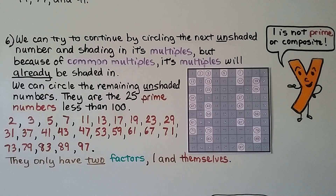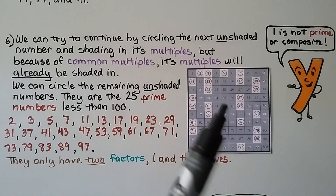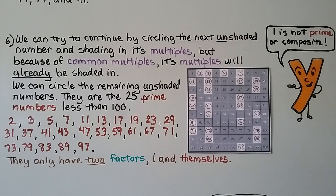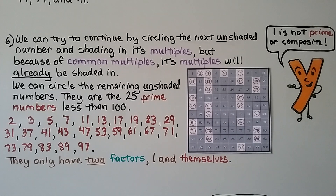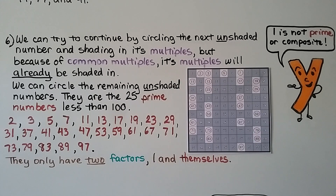We can try to continue circling the next unshaded number, 11, and shading in its multiples, but because of common multiples, all the multiples of 11 are already shaded in. We can then circle all the remaining unshaded numbers — they are the 25 prime numbers less than 100, having only two factors: one and themselves. The shaded numbers are composite, except for 1, which is neither prime nor composite.